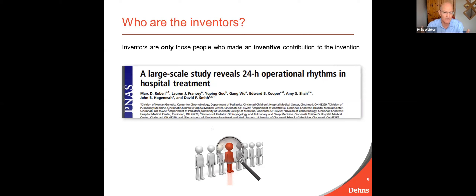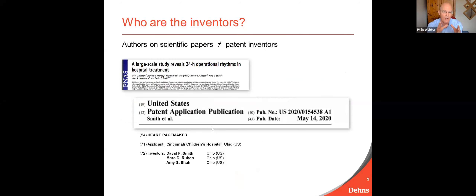It might not be the PhD student because they were only doing exactly what their supervisor told them. It might not be the head of the lab because they didn't have any direct input in this particular invention. Whereas there were eight different authors on the scientific publication, the corresponding patent application — which was filed before the publication — only named three of the eight: the PhD student, the supervisor, and the postdoc. It is vitally important to make a distinction between authors on scientific papers and patent inventors, because they are not necessarily the same thing. You must look rigorously at who made all the different aspects of the invention.